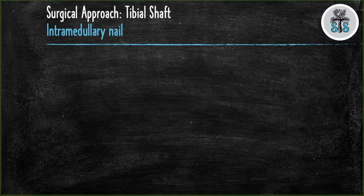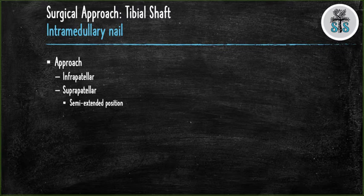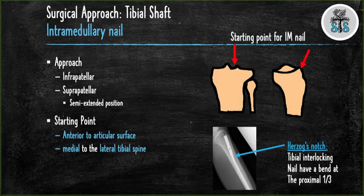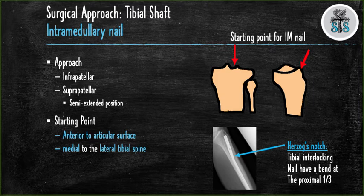Intramedullary nailing will be the most common surgical technique you will see on rotations. There are two approaches: infrapatellar, below the patella with the leg flexed, and suprapatellar, above the patella with the leg in a semi-extended position. The starting point is a common pimp question — it needs to be anterior to the articular surface, best seen on the lateral radiograph, and medial to the lateral tibial spine. The tibial nail has a proximal bend; the apex is called Herzog's curve. You should not use a tourniquet when reaming due to the increased risk of thermal necrosis.